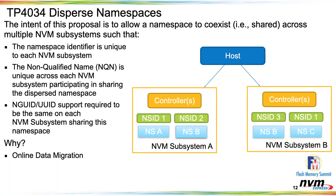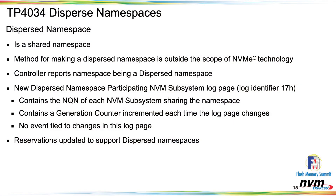Dispersed namespaces were covered already, so I'll just highlight one key point: locally, each NVM subsystem gets its own unique NSID, which is the unique ID the host uses to address a namespace. Different subsystems participating in a dispersed namespace can each have a different namespace identifier. The only things that must be the same across all NVM subsystems are the NGUID, the UGUID, and the UUID. It must be a shared namespace — how it becomes dispersed is outside the NVMe specification — but there is a log page listing which NVM subsystems are participating. Reservations are also updated to handle dispersed namespaces.